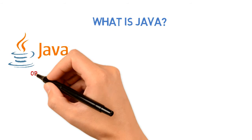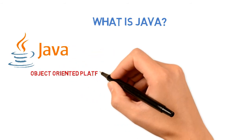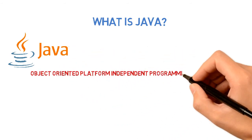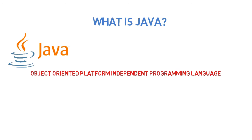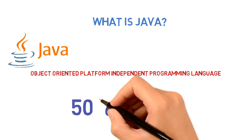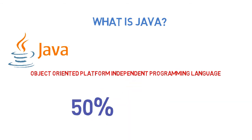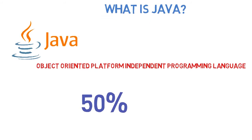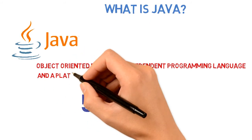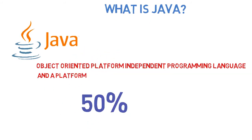You might say, I know Java — it is an object-oriented, platform-independent programming language. But this is only 50% right, because Java is not only a programming language, but also a platform.